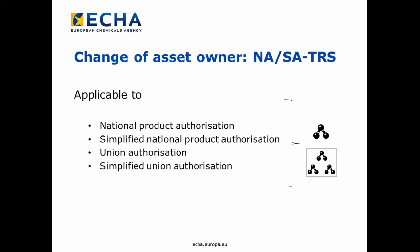Here, one company purchases one or more biocidal product authorizations from another company. This can be national authorizations for a single product or a product family. This is applicable for both standard and simplified authorizations. In addition, this process is applicable to union authorizations.